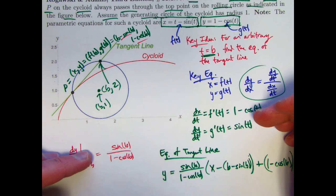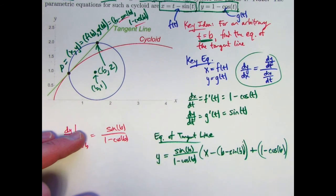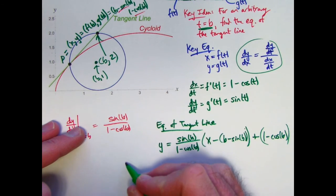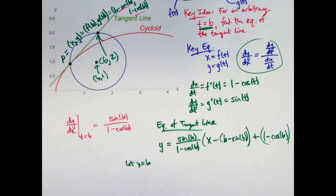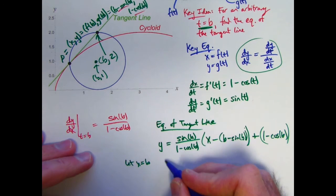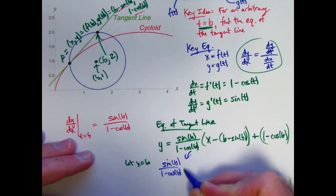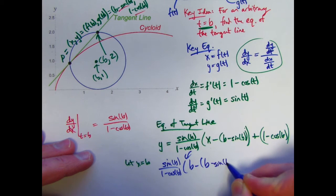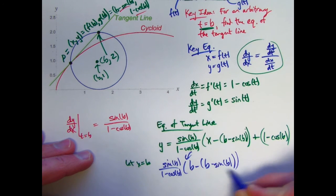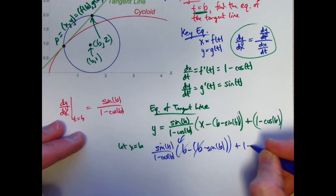So, what I really want to do now is I really want to replace x with b in this equation and see if I get an output of 2. Let x equal b. What happens? This becomes sine b over 1 minus cos b times b minus, in parentheses, b minus sine b. And the b's are going to cancel. Sounds good. Plus 1 minus cos b.